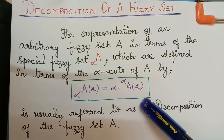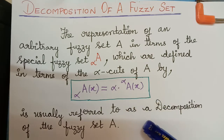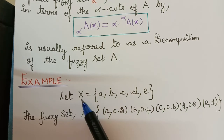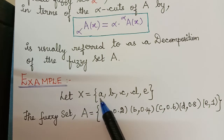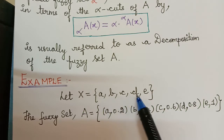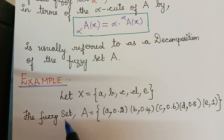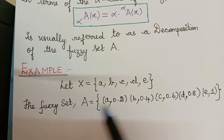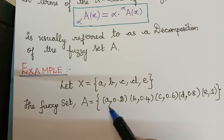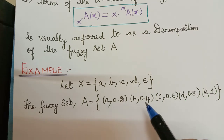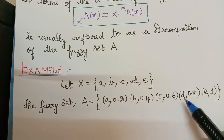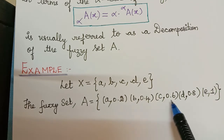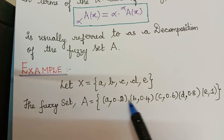We shall understand this with the help of an example. Consider the universal set X = {A, B, C, D, E}, and the fuzzy set A defined on this universal set is given by: A = {(A, 0.2), (B, 0.4), (C, 0.6), (D, 0.8), (E, 1)}, where all these are the membership values of the elements.